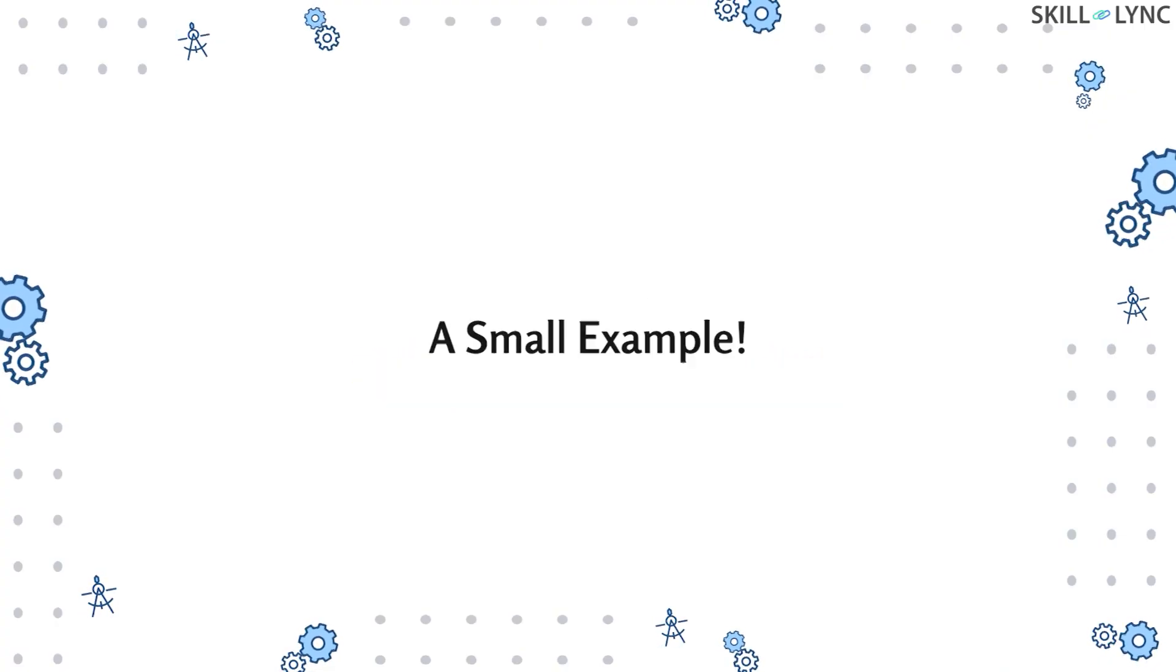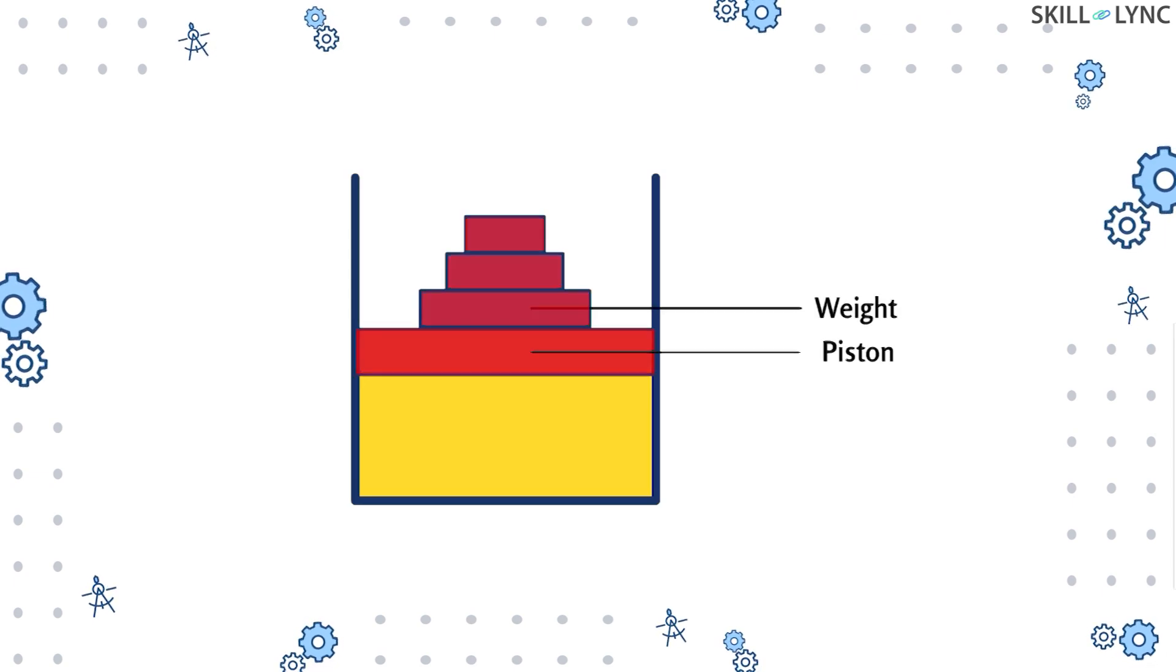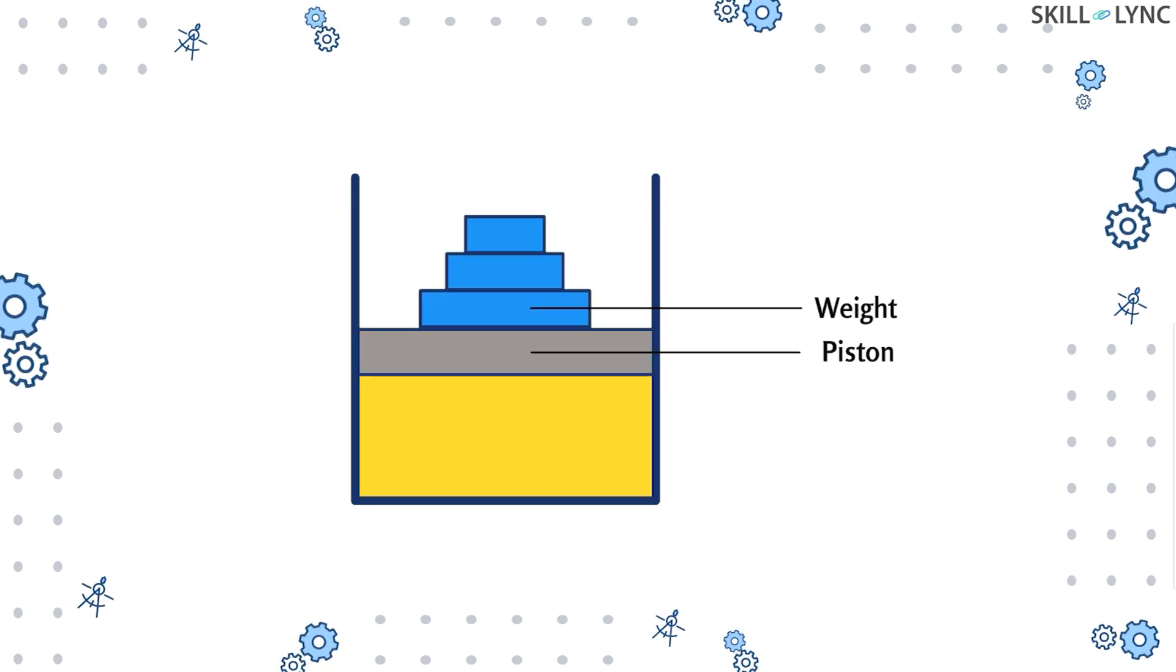Now, what is a quasi-static process? Let's take a small example. Let's consider a cylinder filled with gas. This gas is being compressed using a piston. Three weights are placed on the piston which regulates how much pressure is applied by the piston.